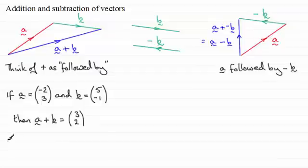And if we were doing the subtraction of those two vectors a minus b, then we just subtract the components. So we've got -2 minus 5 is -7, and 3 minus -1 is 4. So very easy idea there.